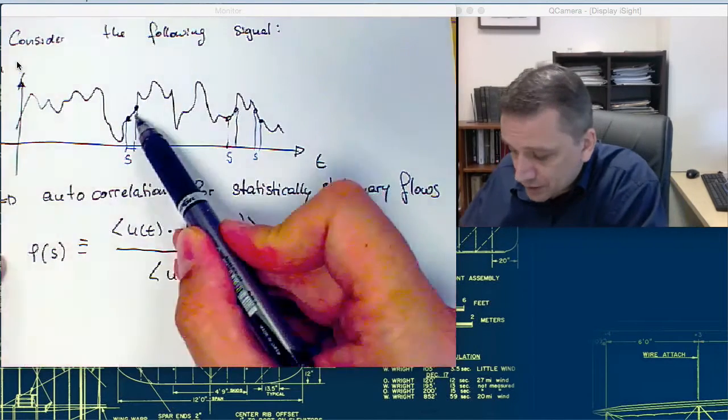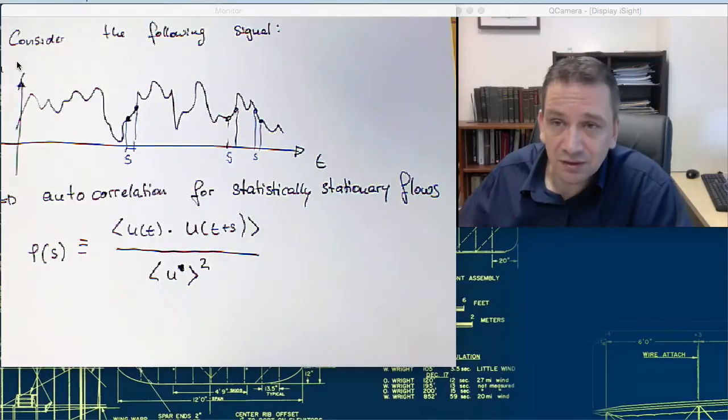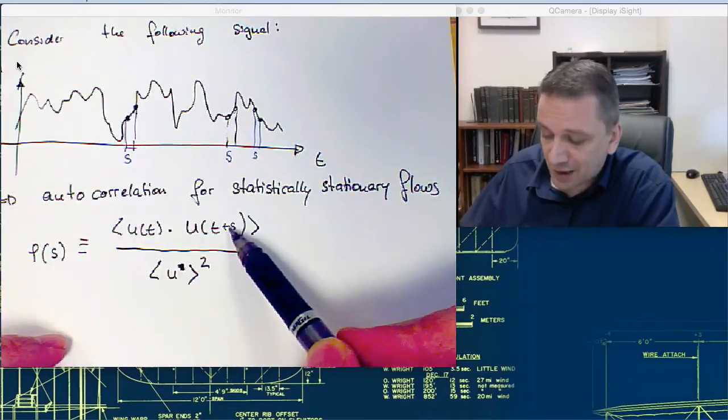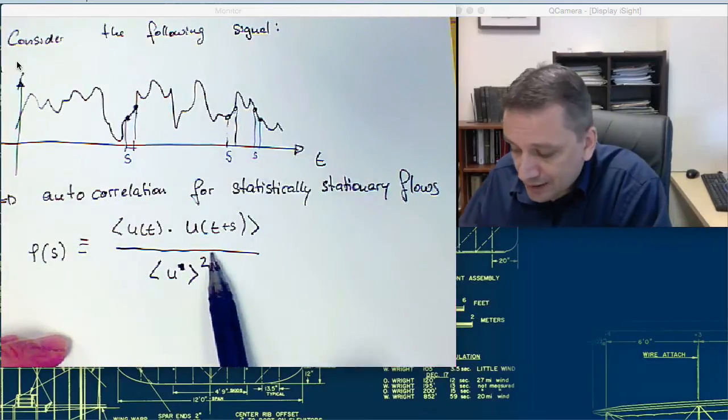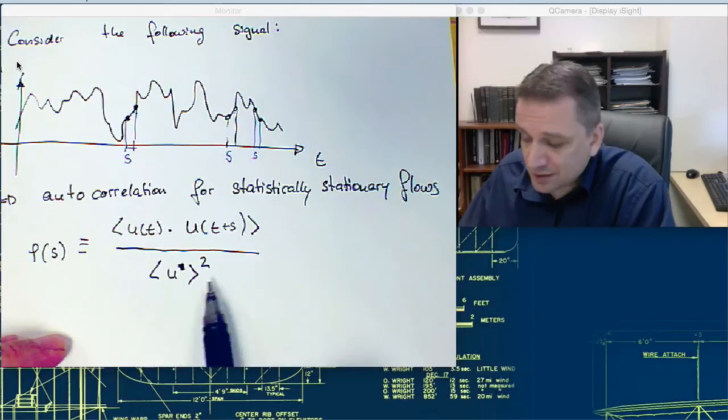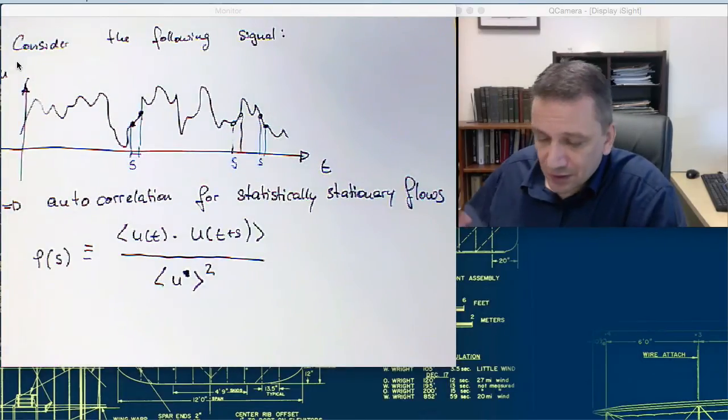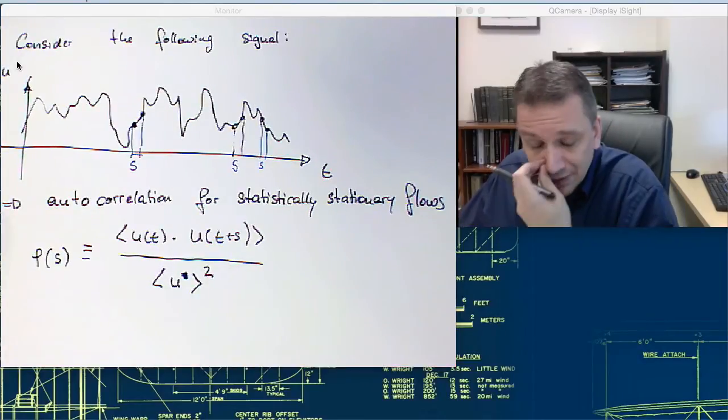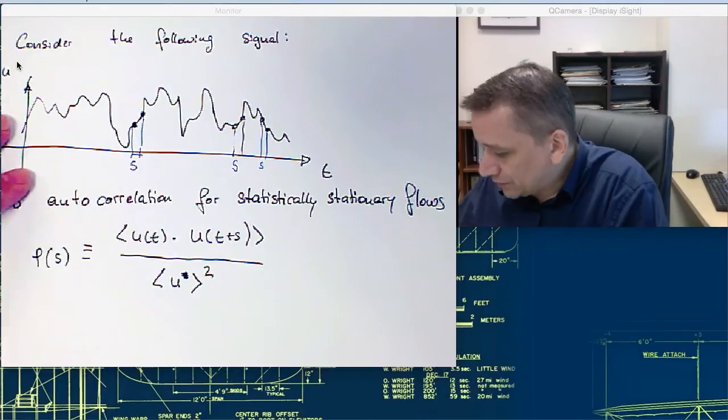Comparing the two signals, or the two points within the signal. One is the original t. One is the t plus a time lapse. So, I'm doing it for all of them. I'm doing time average. And then I'm dividing it with u mean square. This is essentially just to normalize it, just to compare it with other flows. So, I'm going to normalize it with the <u²>.